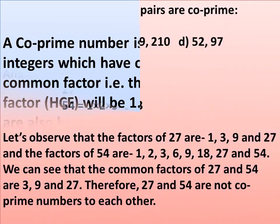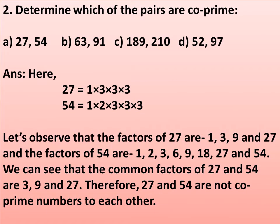We need to determine which of the pairs are co-prime. For the pair 27 and 54: 27 = 1 × 3 × 3 × 3, and 54 = 1 × 2 × 3 × 3 × 3. The factors of 27 are 1, 3, 9, and 27. The factors of 54 are 1, 2, 3, 6, 9, 18, 27, and 54.